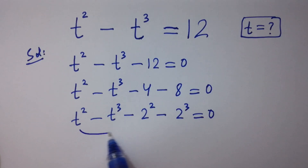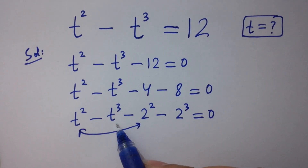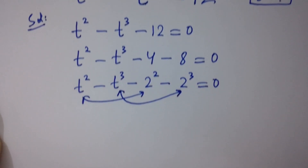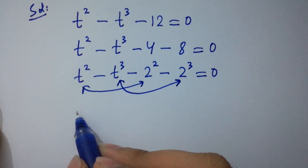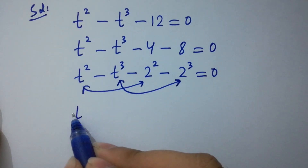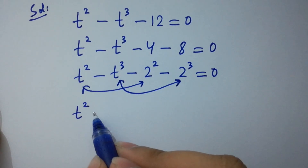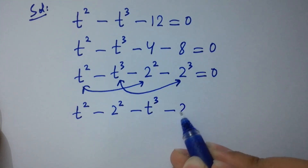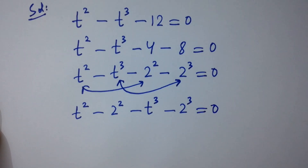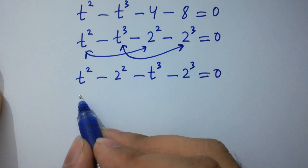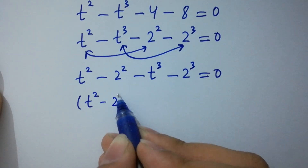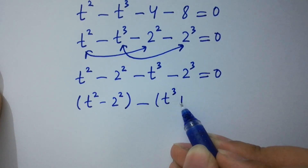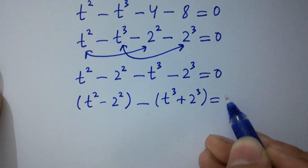So you can see here t squared minus 2 squared, and here you can see t cubed minus 2 cubed. So we can write it as t squared minus 2 squared minus t cubed minus 2 cubed equals 0. Taking t squared minus 2 squared minus common, we have t cubed plus 2 cubed equals 0.